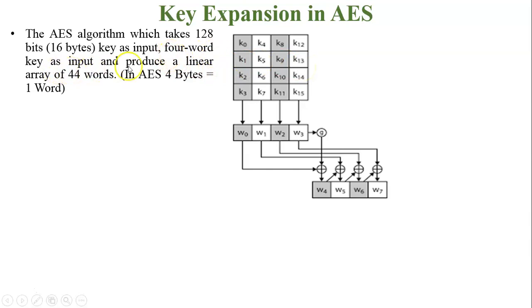A 4 word key as input produces a linear array of 44 words. In AES, 4 bytes equals 1 word. Now see in this figure: this is 1 byte, 1 byte, 1 byte, and 1 byte. Total in this first column there are 4 bytes. If we add all the 4 bytes, it generates 1 word W0. For the second column k4, k5, k6, k7, it's added as 4 bytes and generates 1 word. So total 4 words will be generated from this 16 byte matrix.